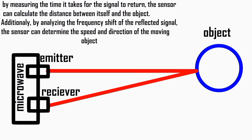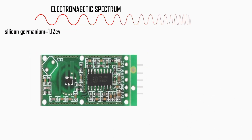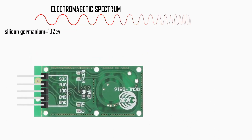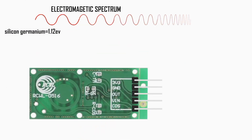Dielectric materials such as PTFE (Teflon) or ceramics may be used in substrates and components to ensure minimal signal loss and high frequency performance. Advantages provided by microwave sensors include non-contact sensing, high accuracy and reliability, wide detection range, fast response time, and versatility.